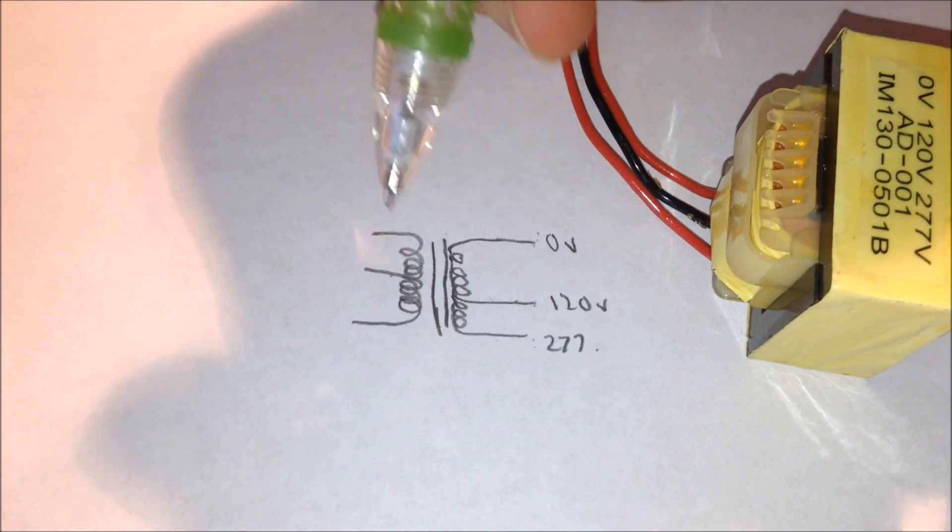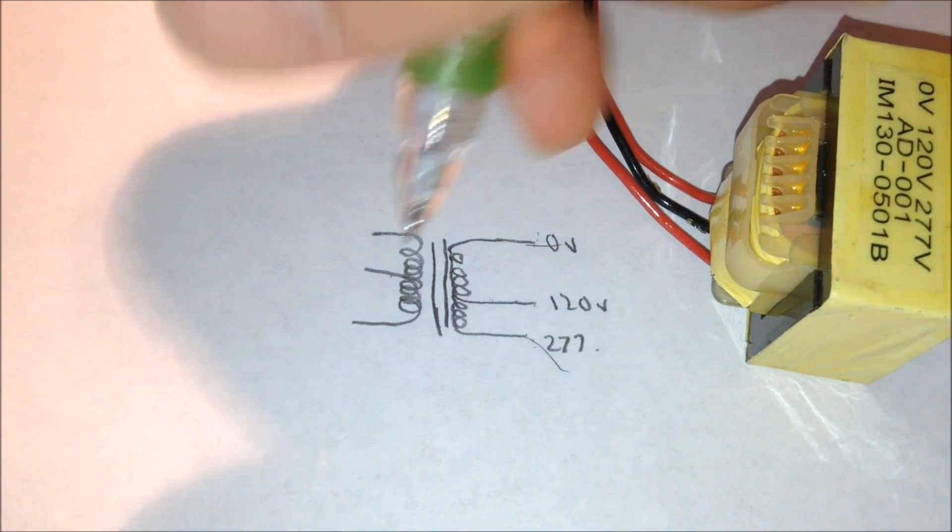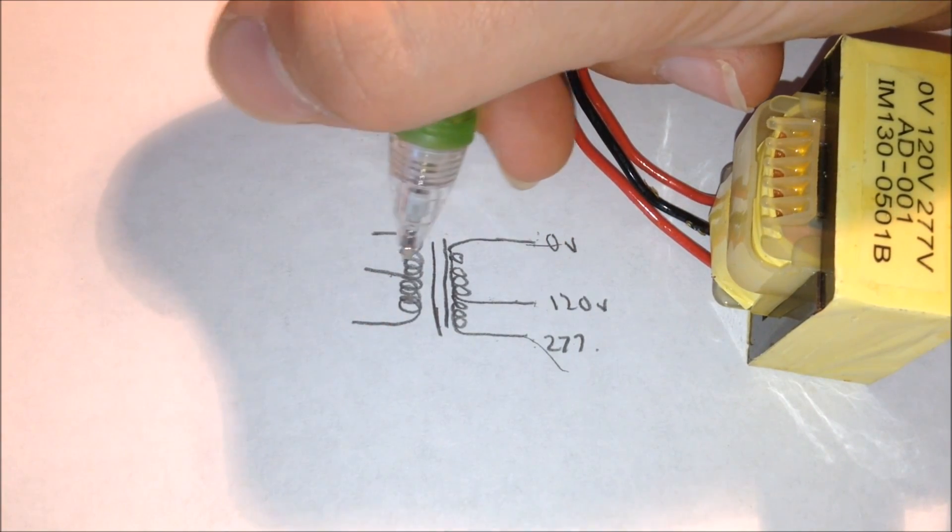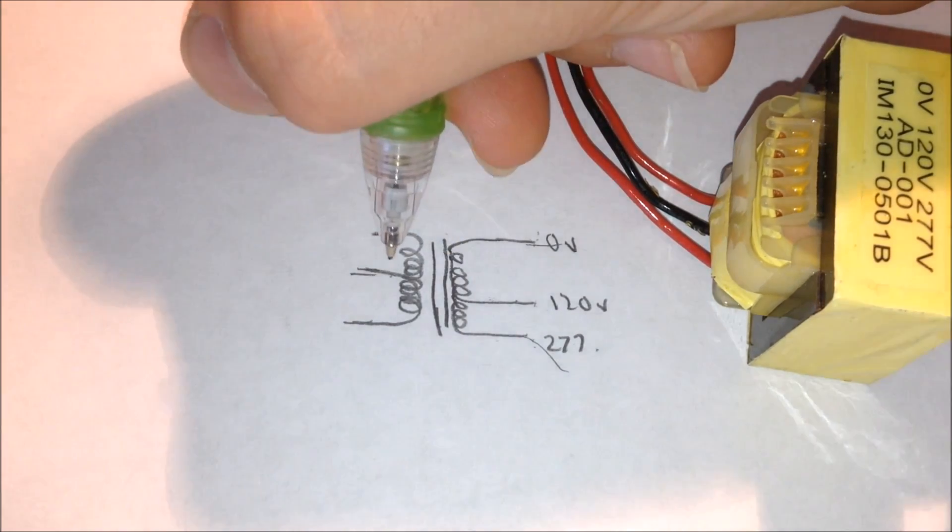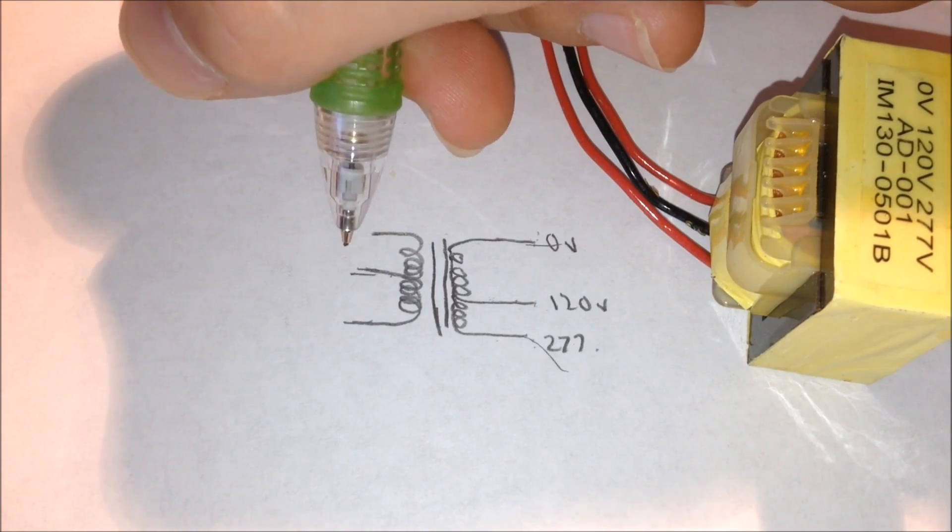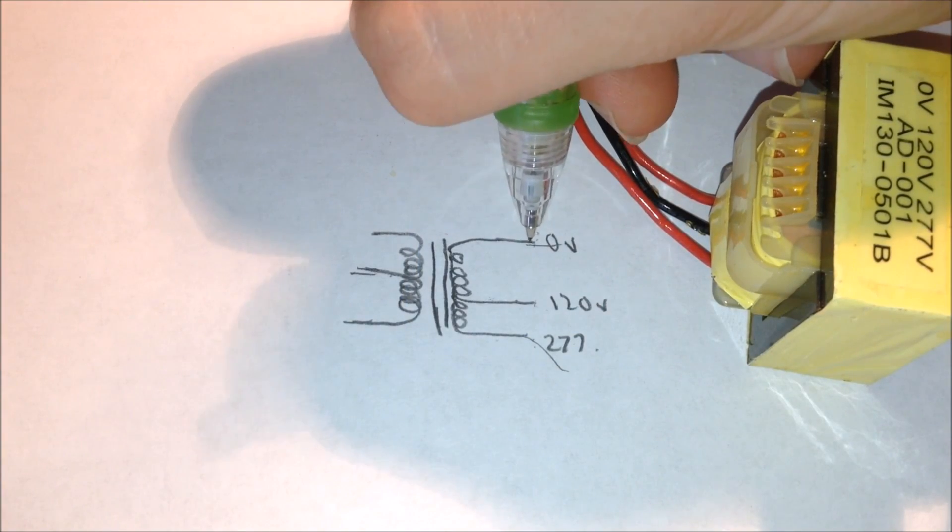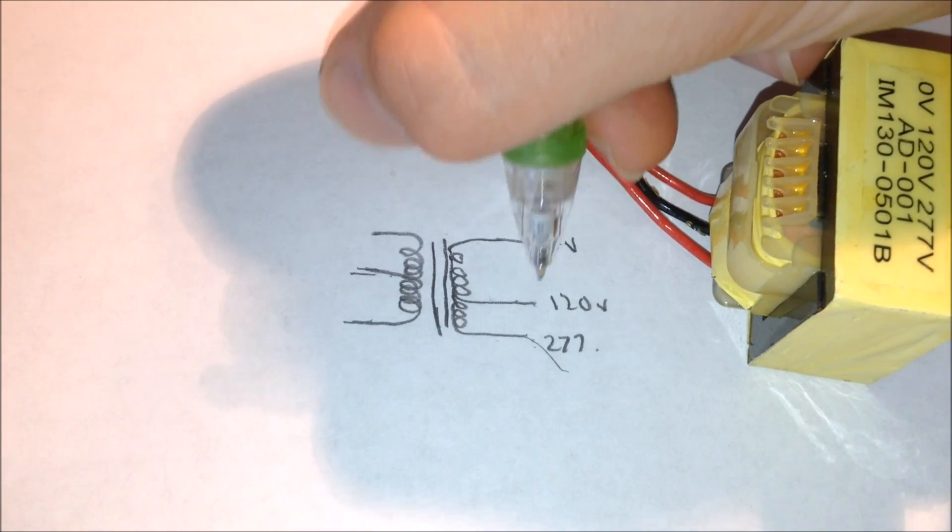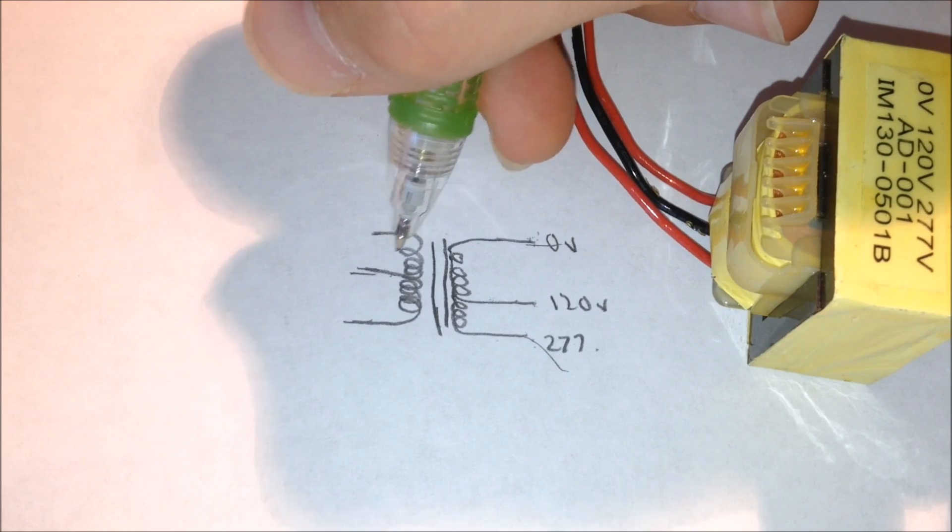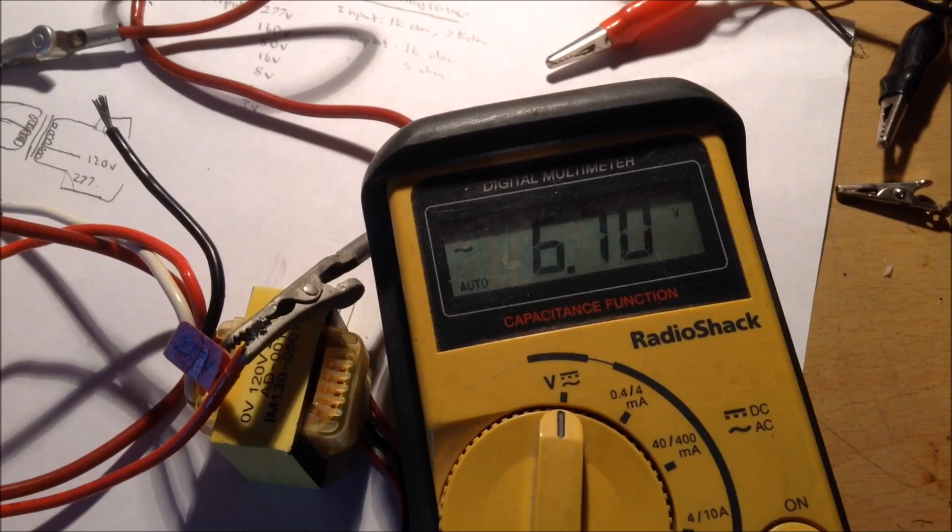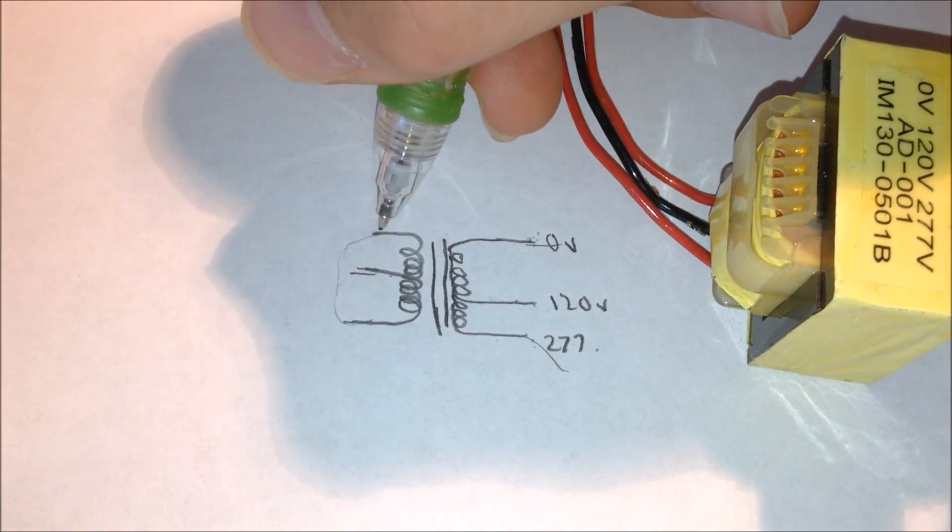But, there's some other cool things that can happen when you change the power input from zero to 277 volts. So, what will happen is this transformer will put out lower voltages. So, instead of 8 volts coming out of here, it will be, instead, about 3 volts coming out of here. So, just by switching the power wire from zero and 120 volts to zero and 277 volts, you can get a wide range of different output voltages here. From 6 volts between these two, to 3 volts between these two, to 8 volts between these two, and 16 volts between these two.